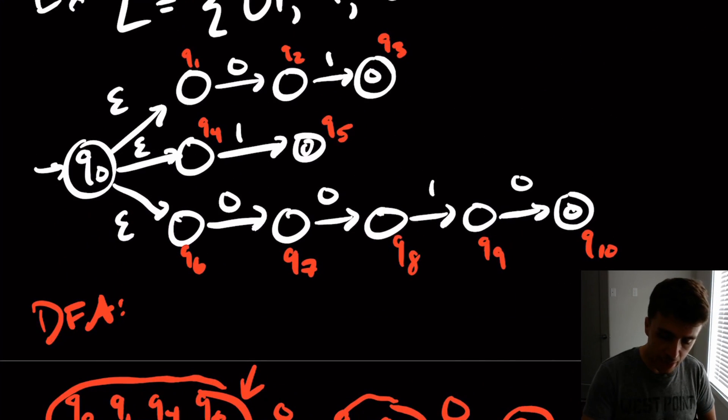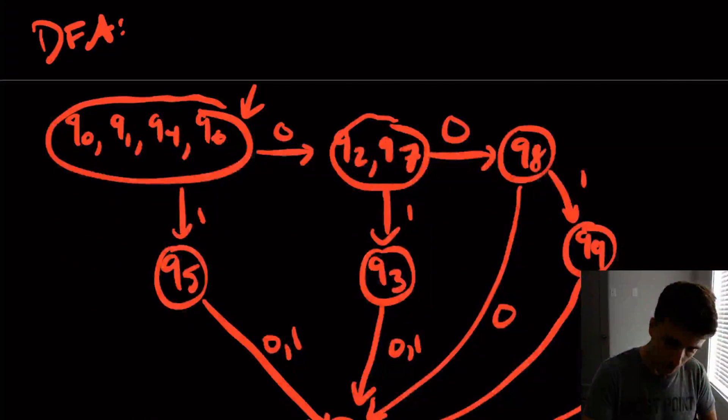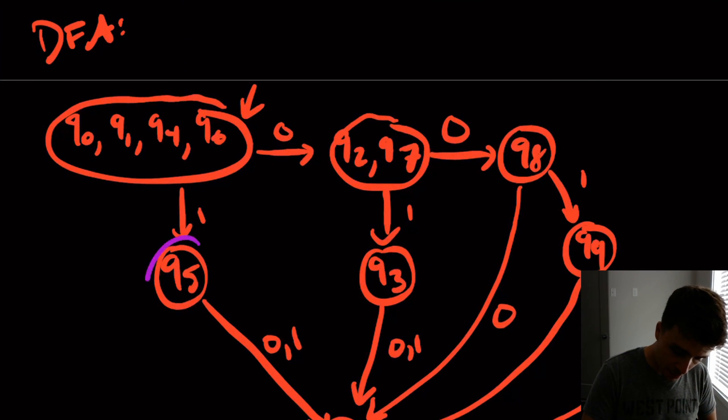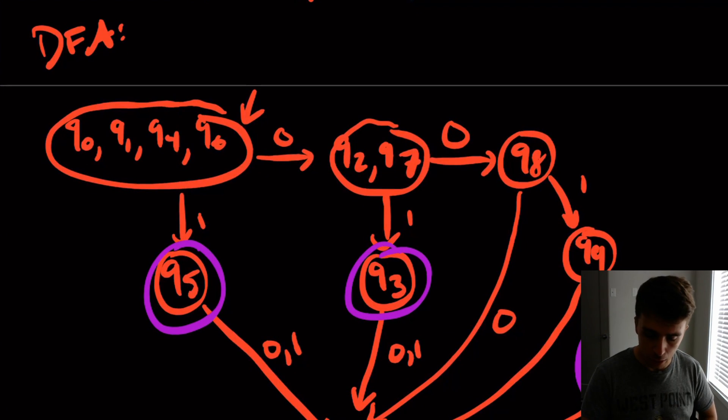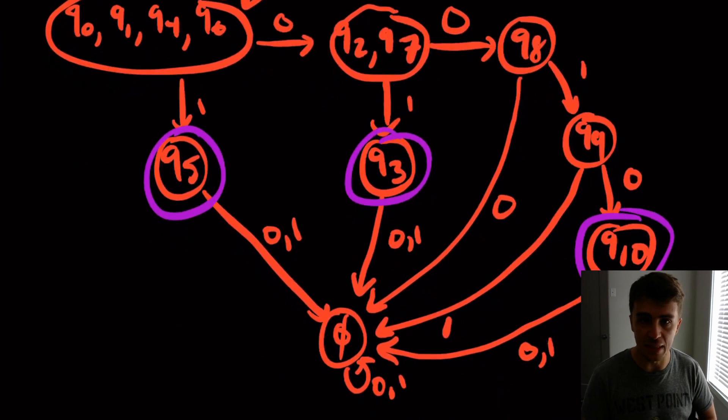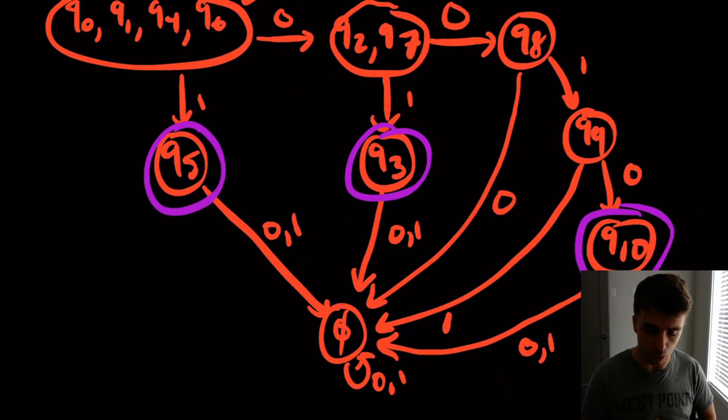And most importantly, the final states here are anything that involves q3, 5, or 10. So that's going to be 5, 3, and 10. And we can actually see that we get the right strings, because one is accepted, 01 is accepted, 00103 is accepted. And there's no loops back to these four states up here. So we get exactly the language that we want.